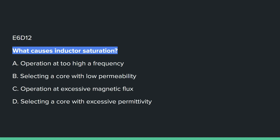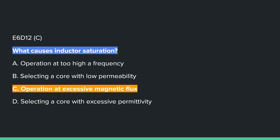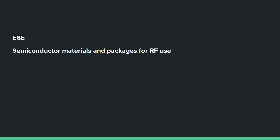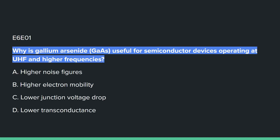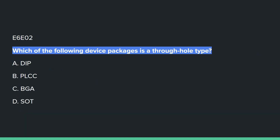E6D12: What causes inductor saturation? C, operation at excessive magnetic flux. E6E covers semiconductor materials and packages for RF use. E6E01: Why is gallium arsenide useful in semiconductor devices operating at UHF and higher frequencies? B, higher electron mobility. E6E02: Which of the following device packages is a through-hole type? A, DIP.